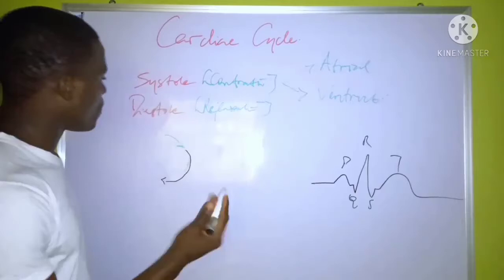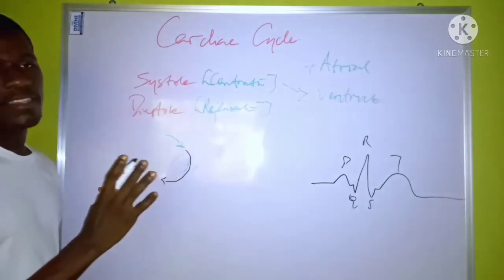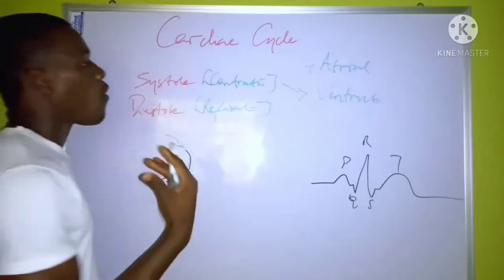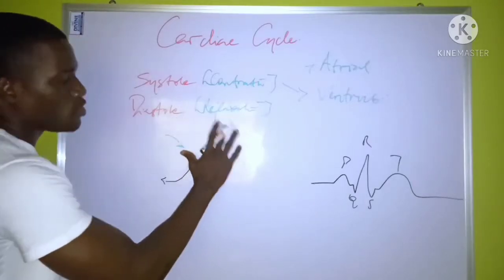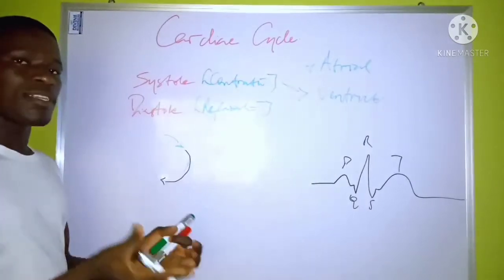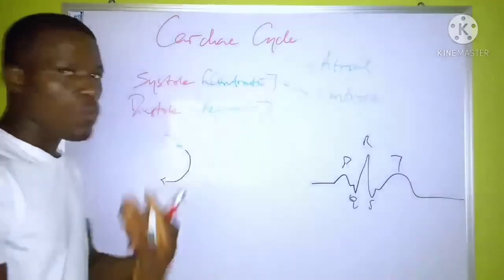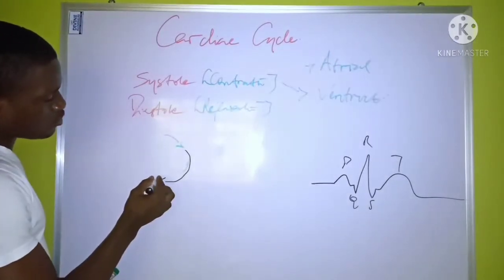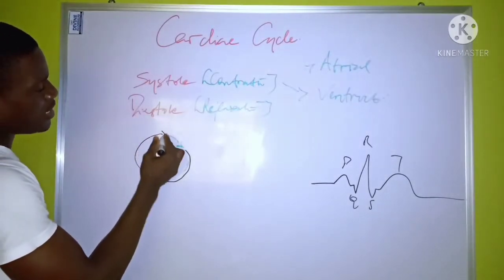The next part is the diastole. Diastole refers to relaxation or repolarization. A relaxation of the heart takes enough time for the heart to relax so that blood can flow back into it. This is usually the largest phase of the cardiac cycle.